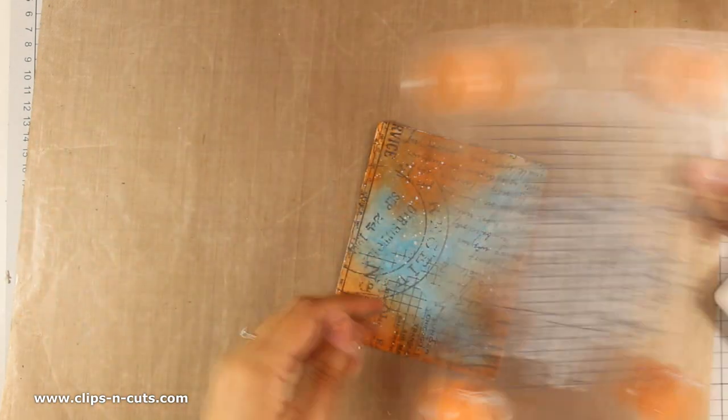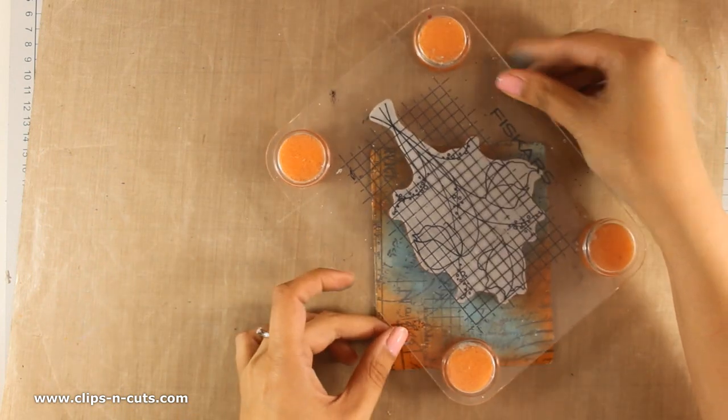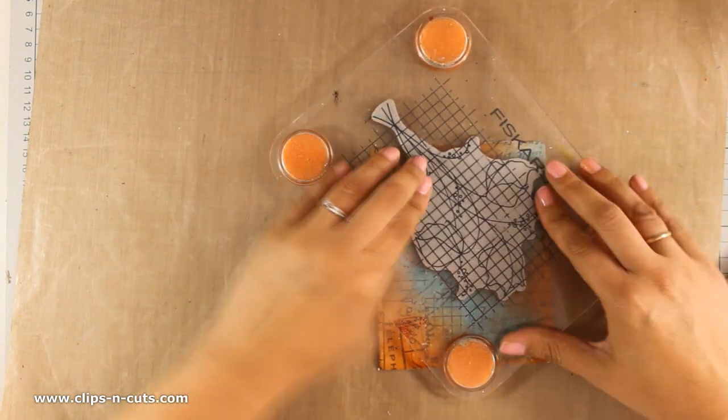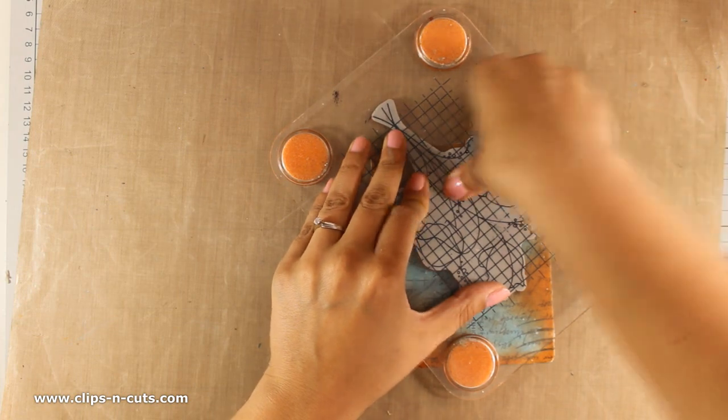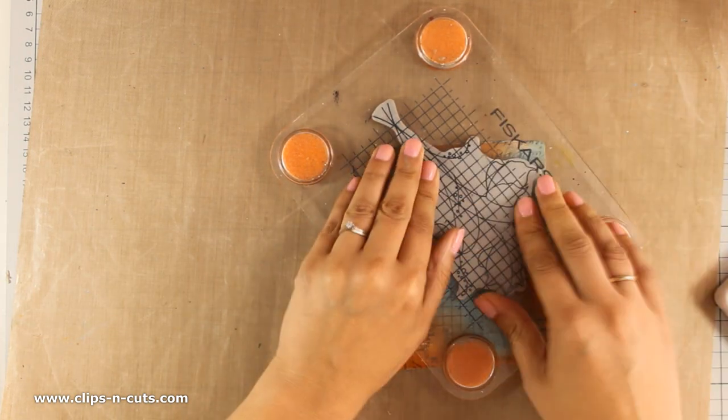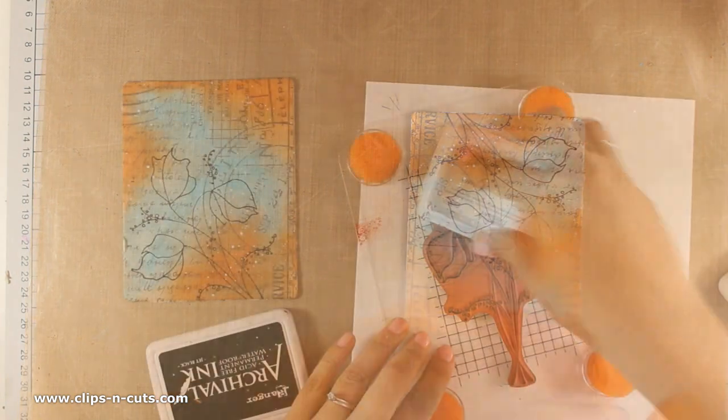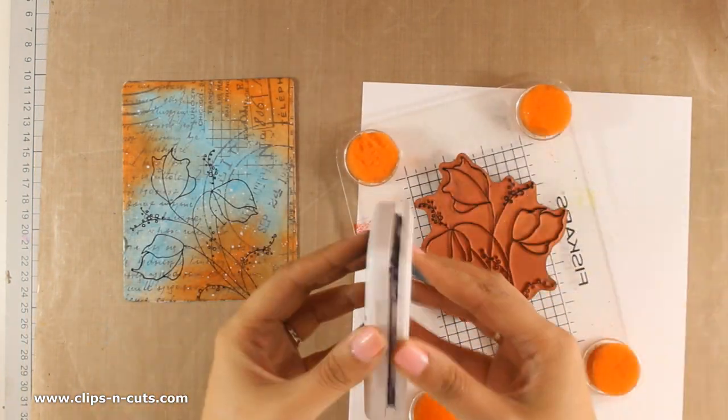I am going to stamp directly on my background using Archival Ink. Remember that since I have used gelatos on my background, if I spray or add another medium on top, the color might move. So I make sure that I stamp with Archival Ink, and you will see how I work and do my shadows later on.